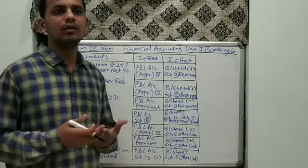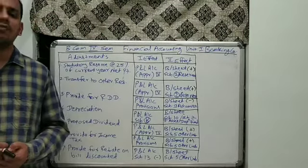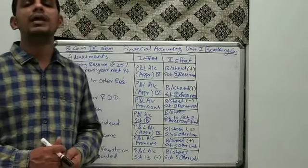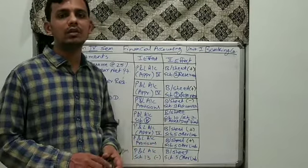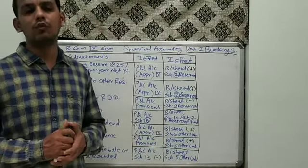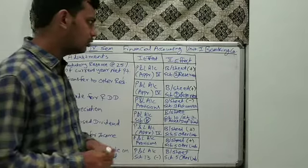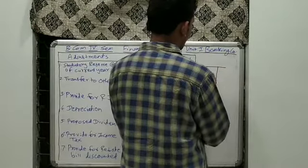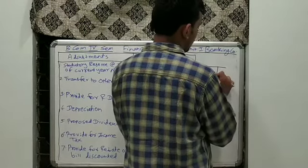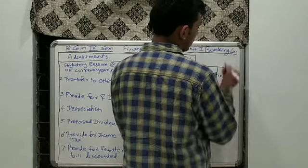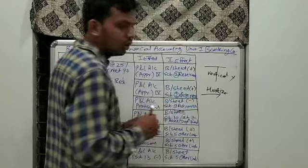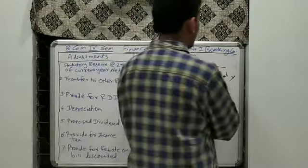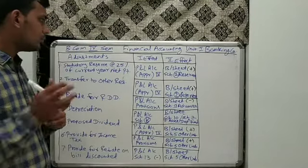In the earlier videos, we have seen the theoretical framework of banking companies. After that, we have seen the Proforma related to the P&L account of banking company. And in the last video, we have seen the format of the balance sheet for banking companies. We noted that instead of following a vertical format, we follow the horizontal format, which is applicable for banking companies.